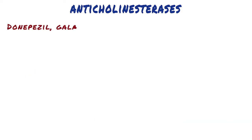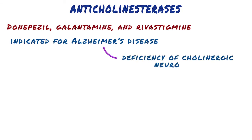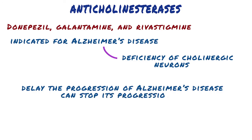Donepezil, galantamine, and rivastigmine are specifically indicated for Alzheimer's disease. That is because patients with Alzheimer's disease have a deficiency of cholinergic neurons in the central nervous system. This observation led to the development of anticholinesterases as possible remedies for the loss of cognitive function. Despite the ability of donepezil, rivastigmine, and galantamine to delay the progression of Alzheimer's disease, none can stop its progression.